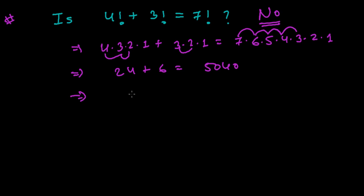but here if you see 24 plus 6, that is 30. And 30 can never be equal with 5, 0, 4, 0. Come on, it's not.